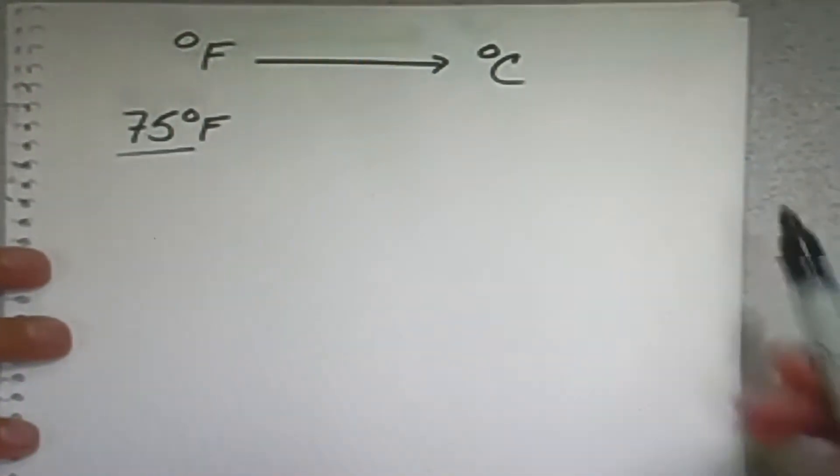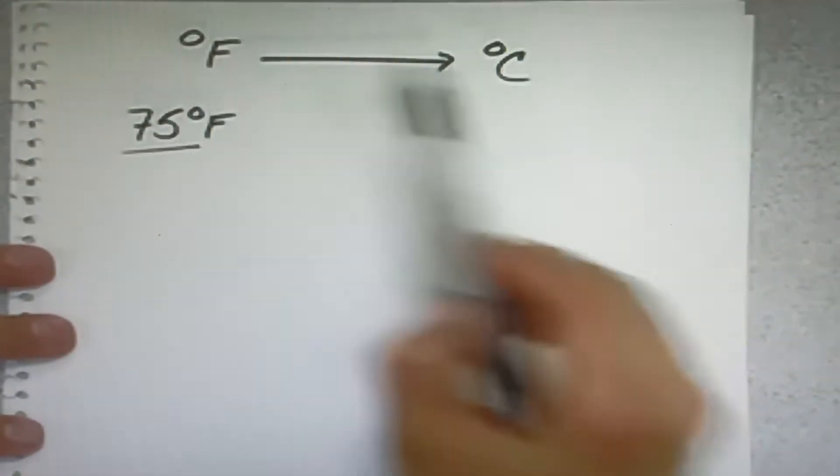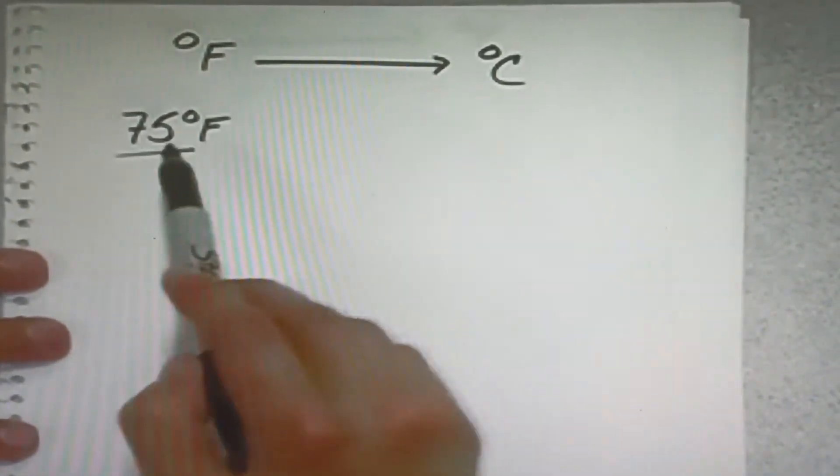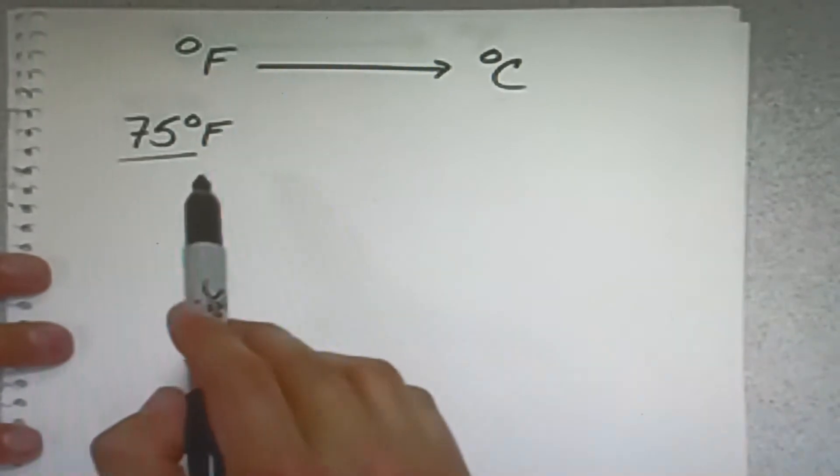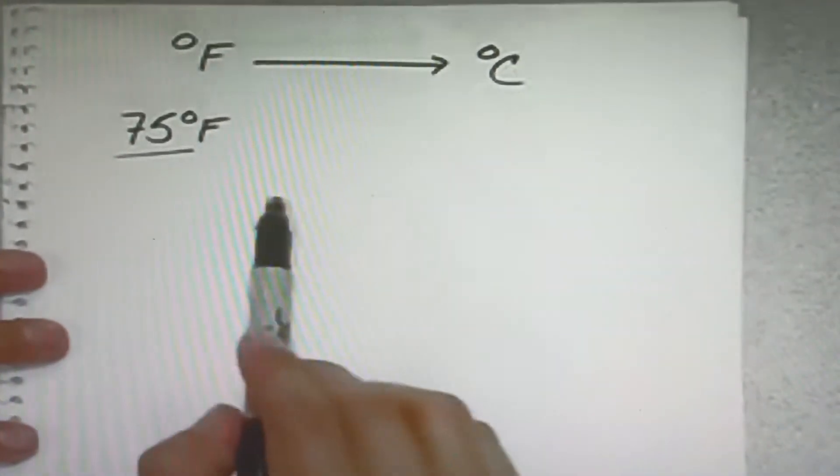In chemistry, we use the metric system which uses degrees Celsius instead of Fahrenheit. Now we know that in Fahrenheit, 75 degrees is a nice comfortable day. What is that temperature in degrees Celsius?